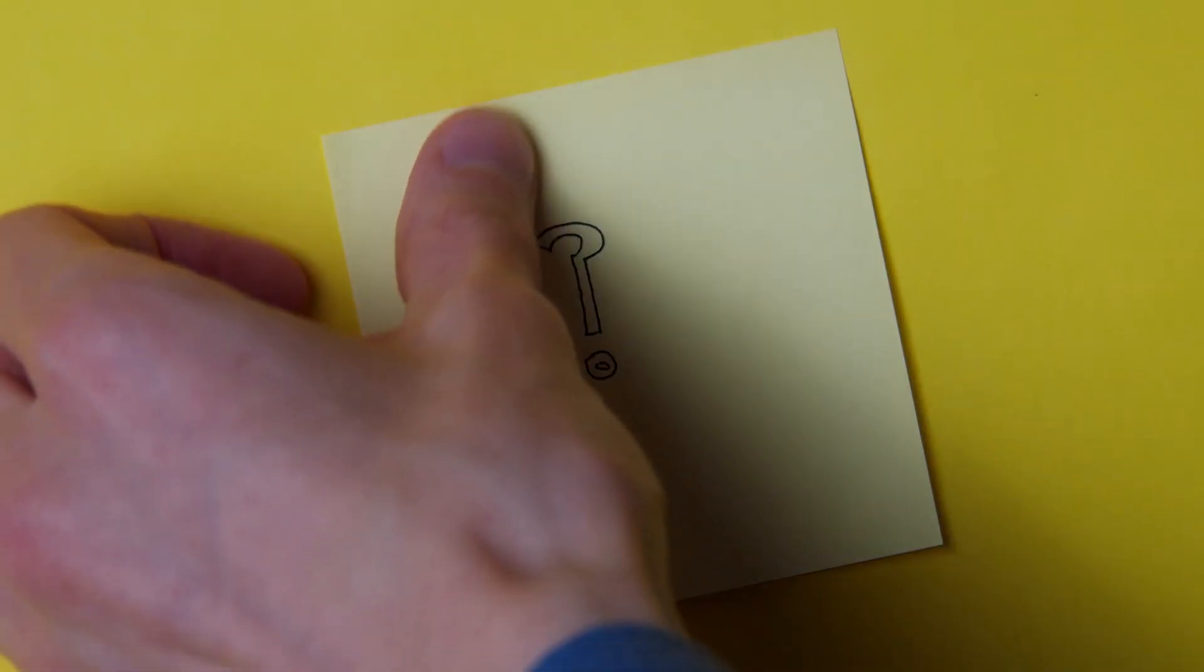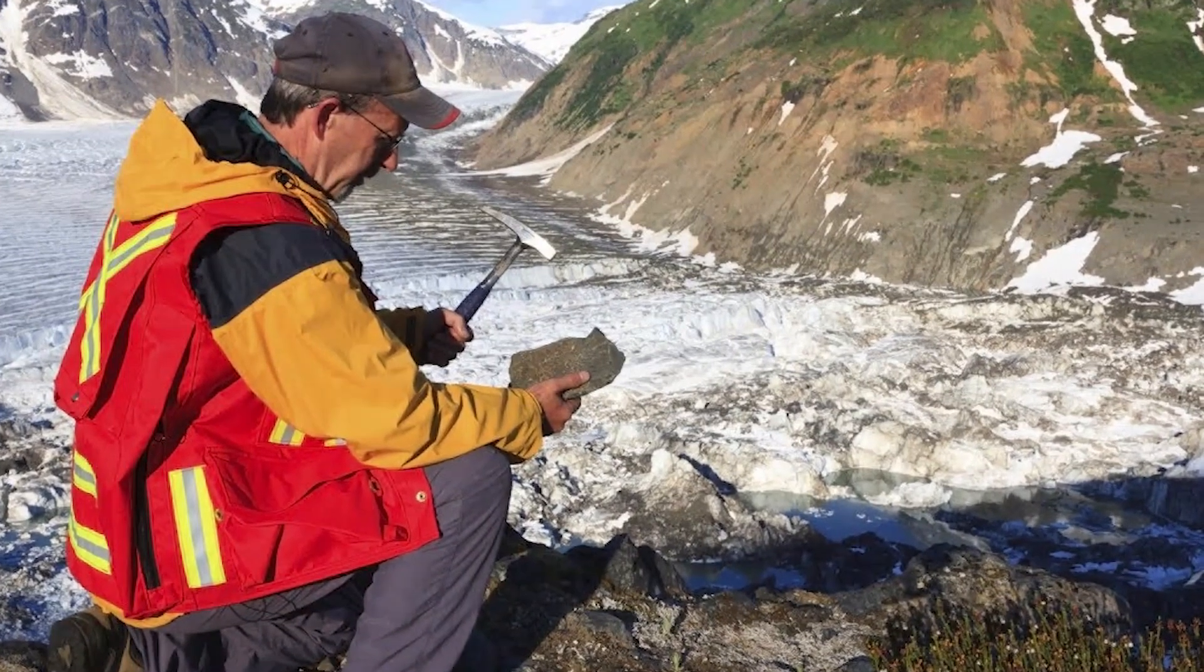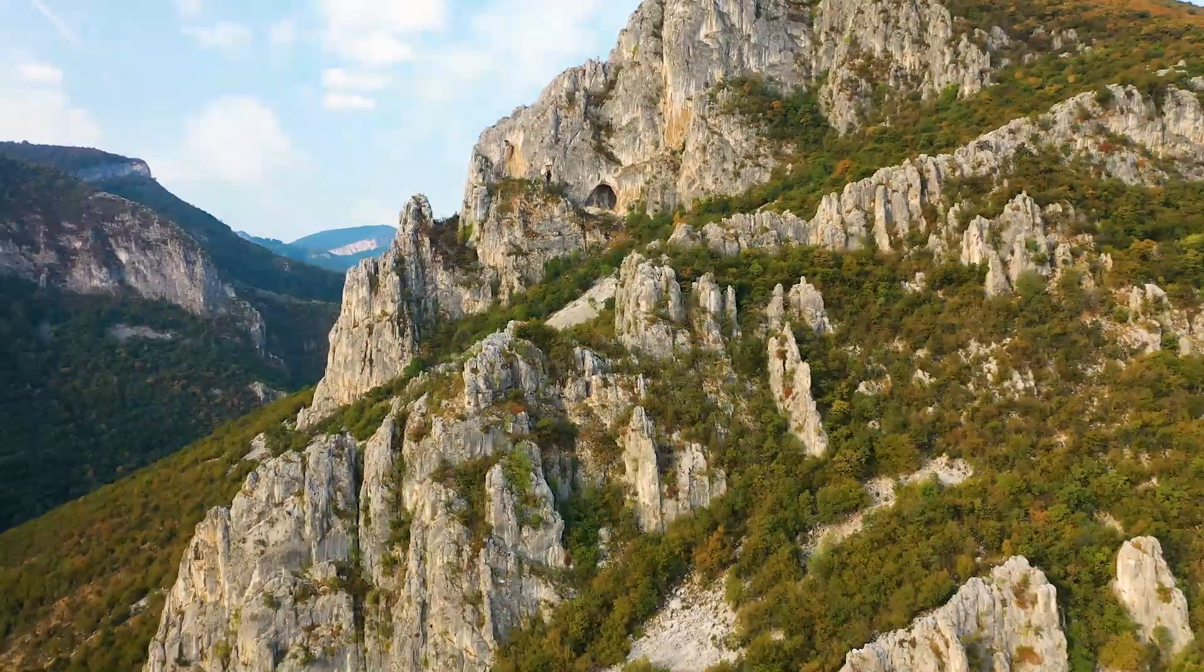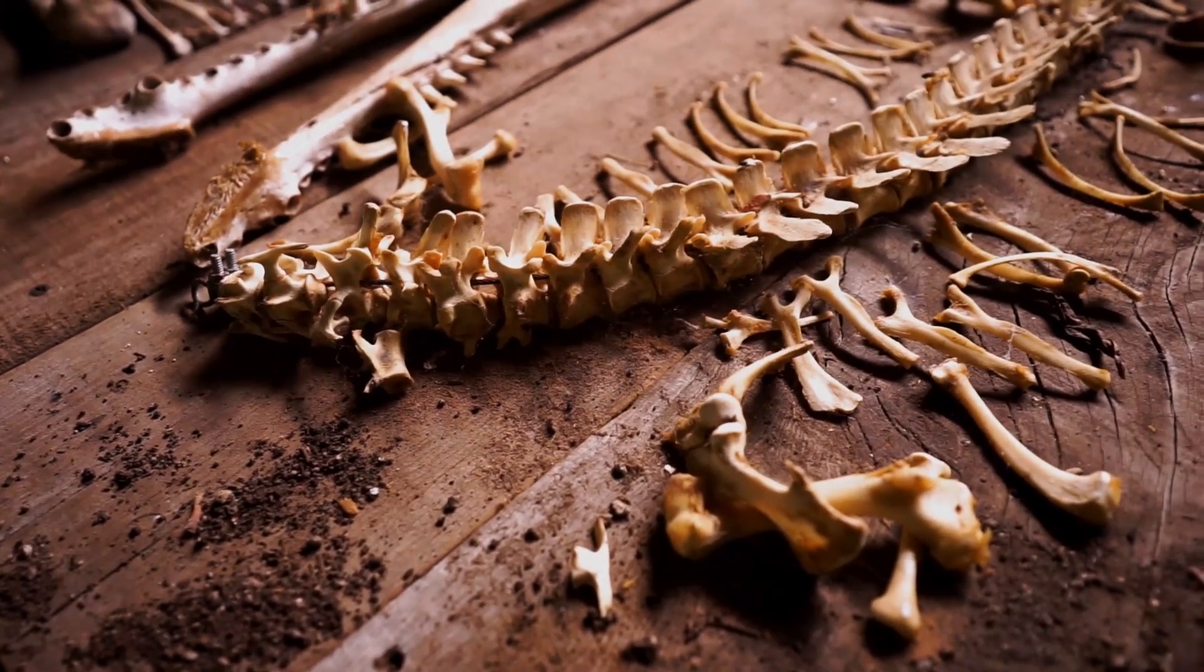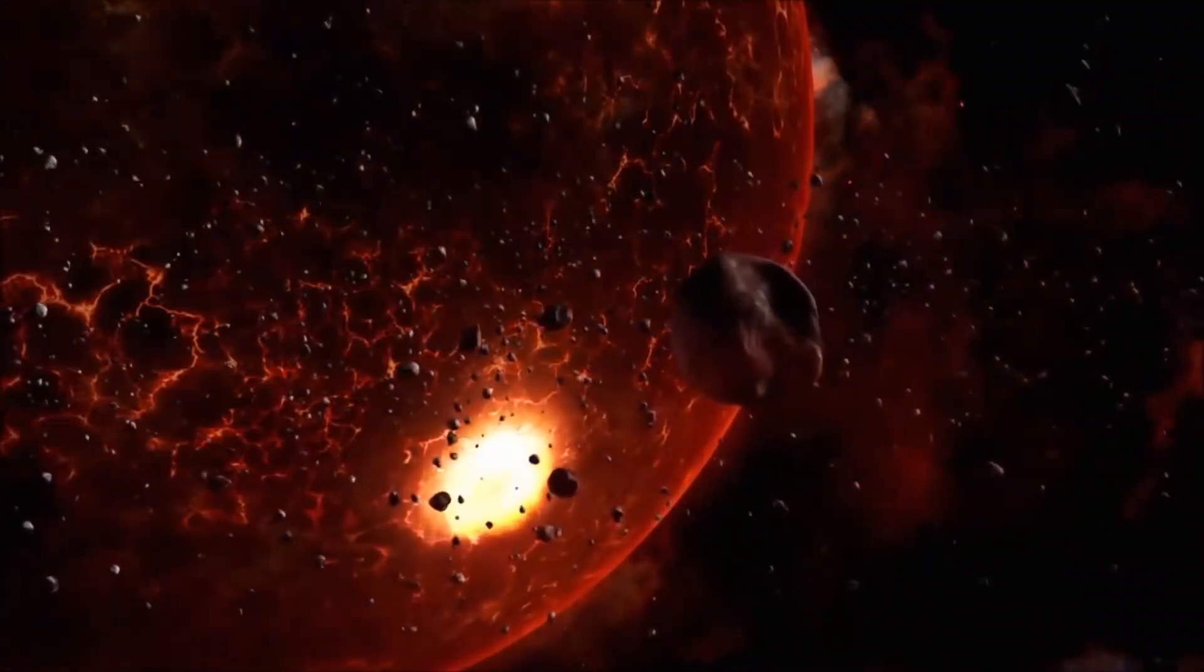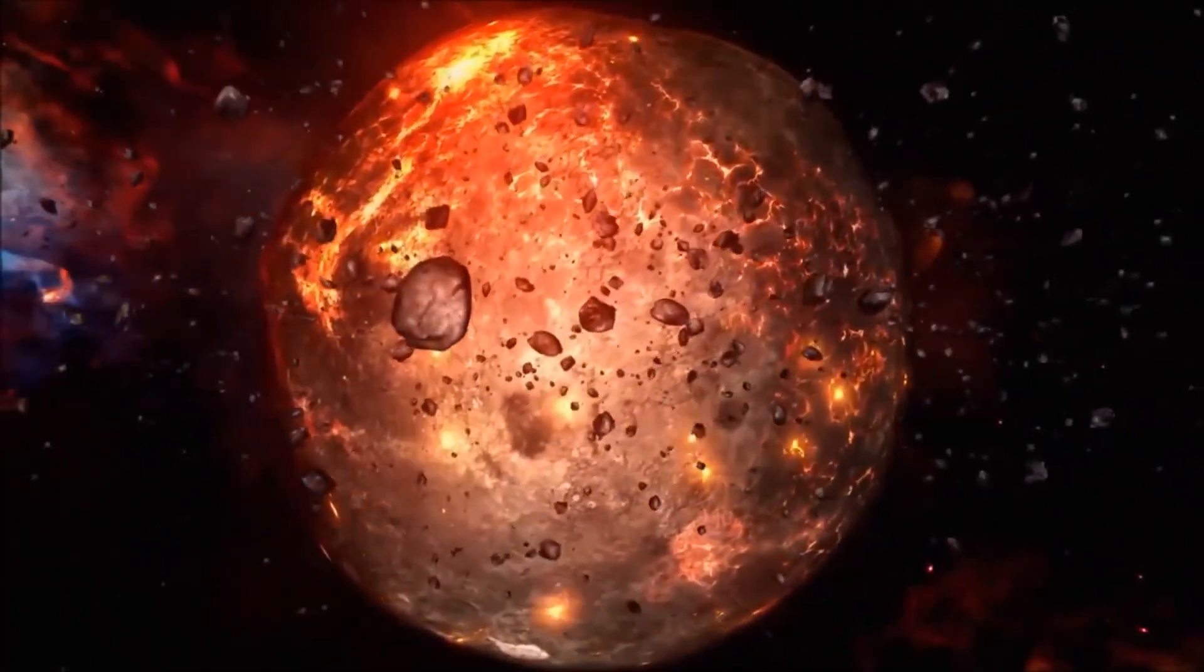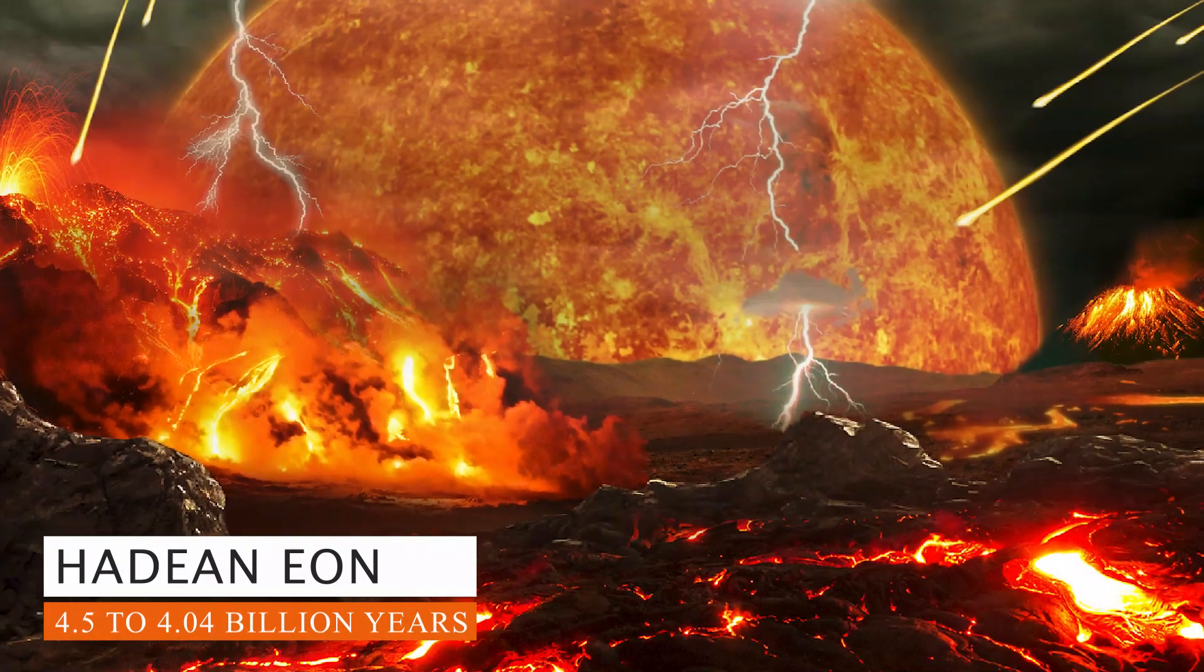But what happened on planet Earth specifically? Well, geoscientists used timescales to assign relative age names to events and rocks that separate major events in Earth's history, based on significant changes recorded in rocks and fossils. The Hadean Eon, named after the Greek god and ruler of the underworld Hades, is the oldest eon that dates back to 4.5 to 4.04 billion years.